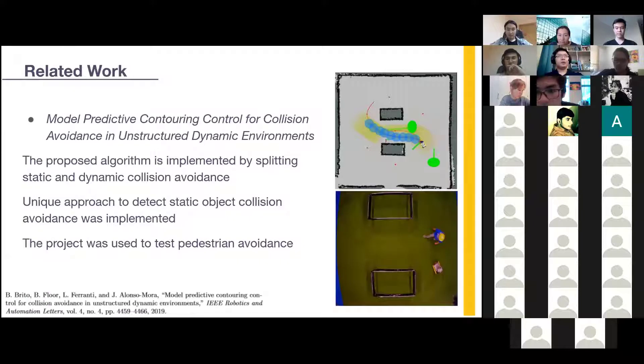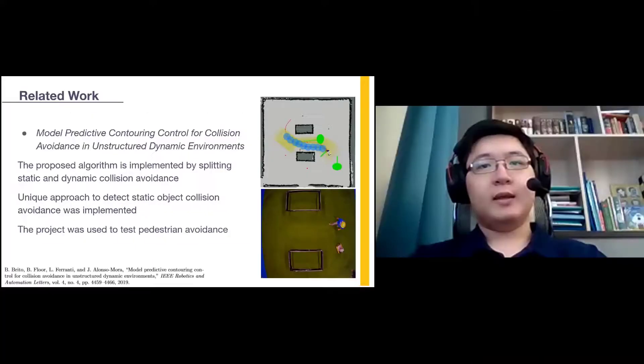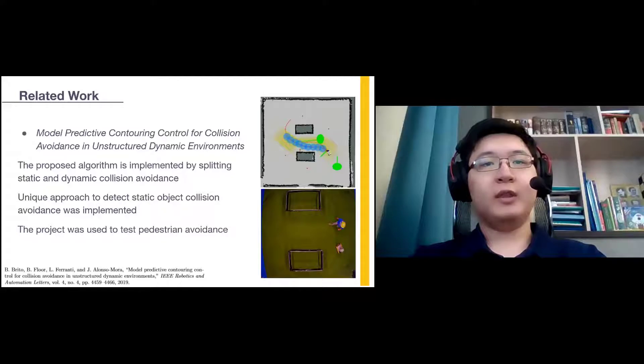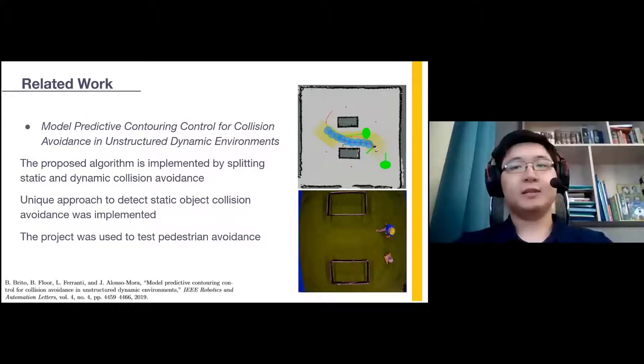In the next work, local model predictive contouring control algorithm was proposed. It is unique compared with other control methods for its decision to split static and dynamic collision avoidance as constraints to model predictive control. Static object collision avoidance is implemented by calculating the free area around the robot where it can reach. And dynamic object avoidance is related to intention recognition. Model was very successful, but nevertheless, the model is based on differential-drive kinematics and does not accurately represent the skid-steering kinematics.